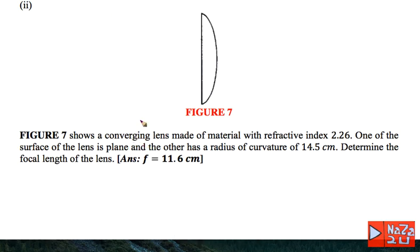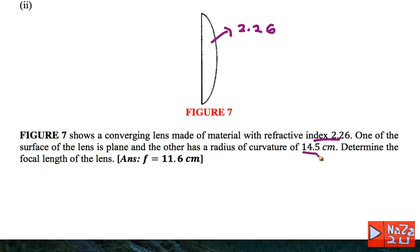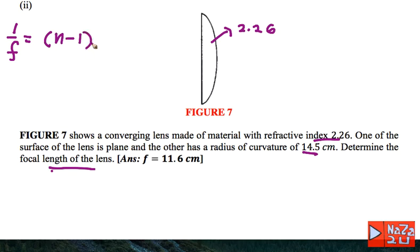Next question: Figure 7 shows a convergent lens made of material with refractive index n equals 2.26. One surface of the lens is plane, and the second surface is concave with a radius of curvature of 14.5. Find the focal length of the lens using the lens maker equation: 1 over f equals n minus 1 times the quantity 1 over R1 minus 1 over R2.